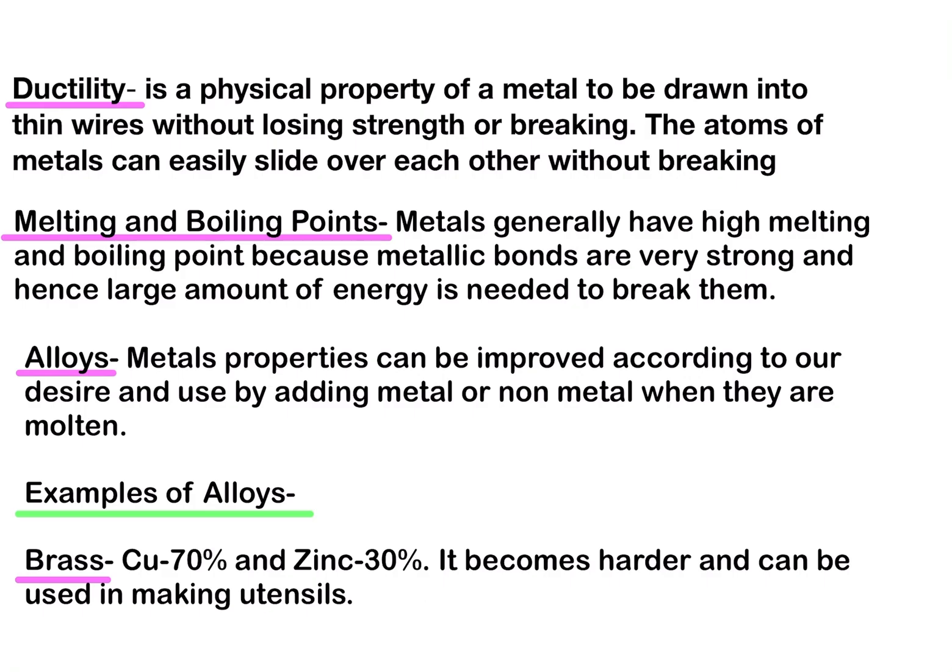We now move to alloys, which are mixtures that improve the properties of metals. Metal properties can be improved according to desired use by adding a metal or non-metal when they are molten. For example, brass consists of 70% copper and 30% zinc. This makes it harder and it can be used for making utensils. It becomes much harder than pure copper and has a gold-like color.